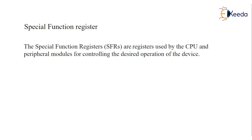The special function register is part of data memory, allocated at the top of the data memory. 256 bytes are assigned for the special function registers, dedicated to specific functions such as timers, ADC, serial communication, and I/O devices.